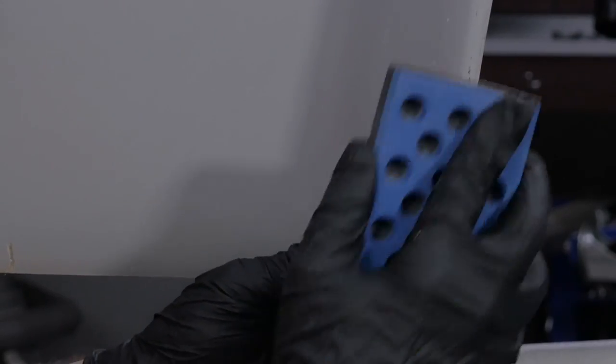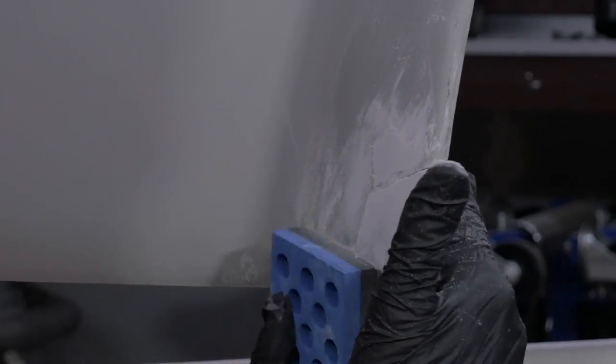Using coarse sandpaper on a block, we're leveling the uneven edges to the surrounding area and creating tooth on the fiberglass gel coat for the next level of repair to stick to.